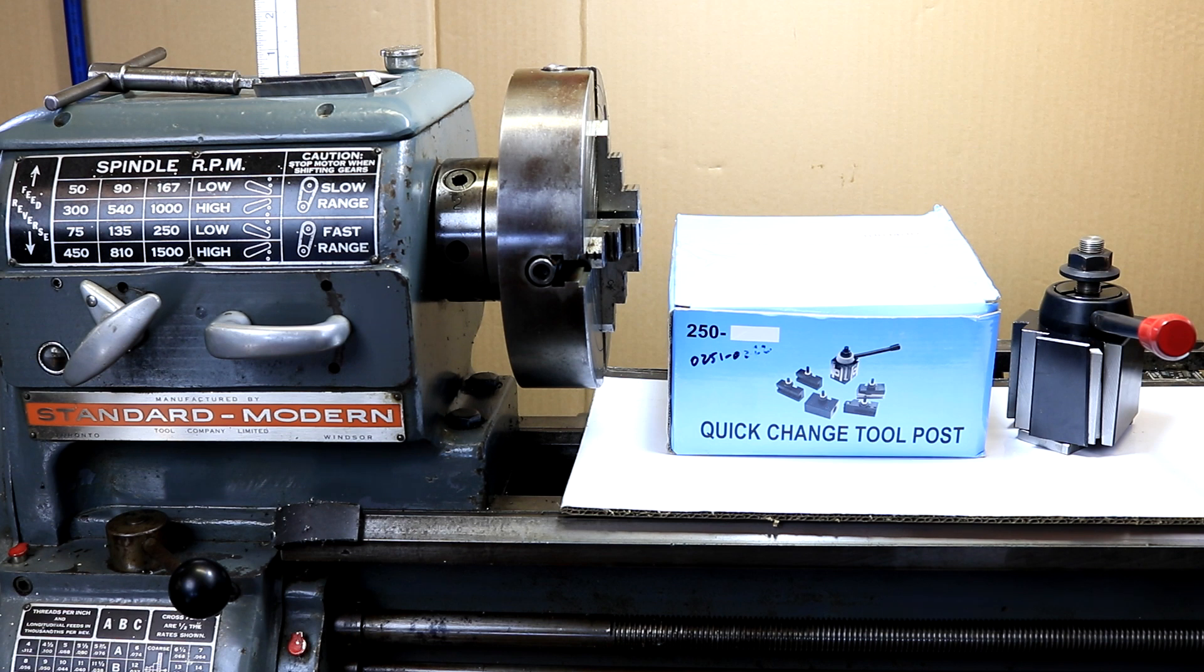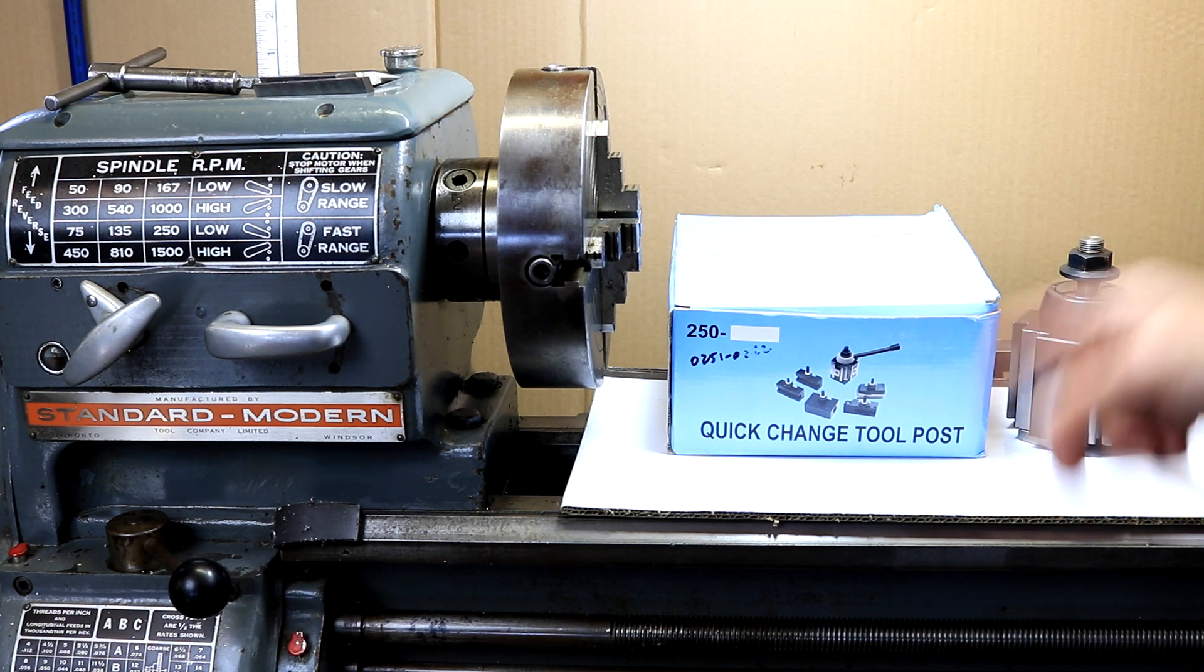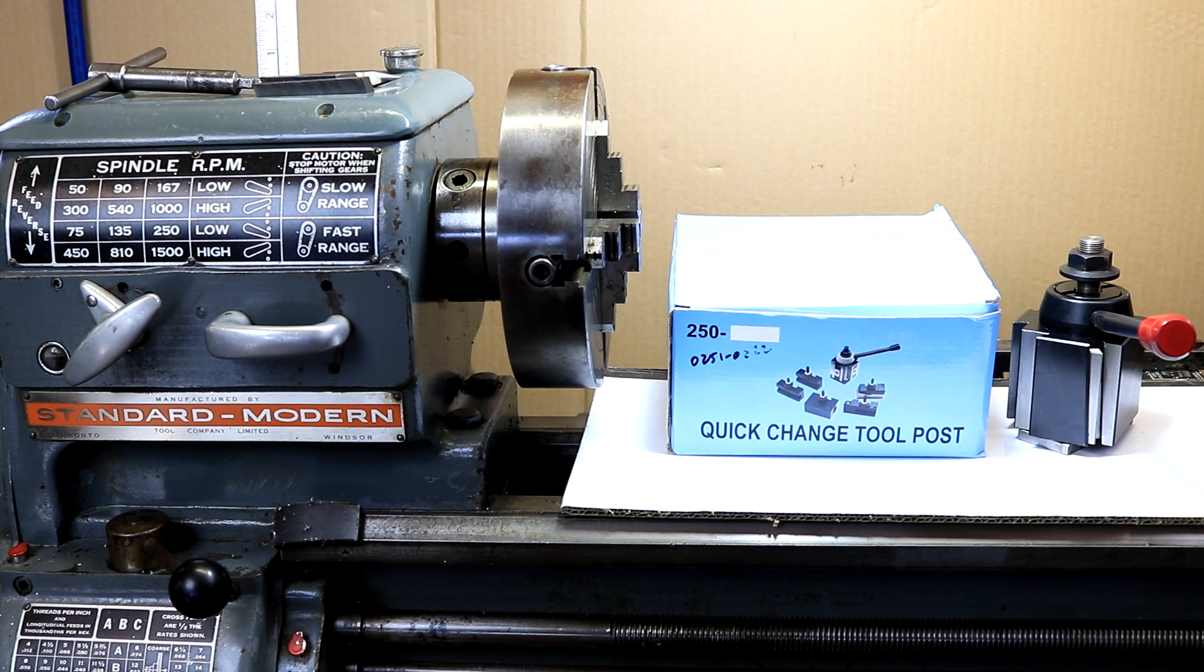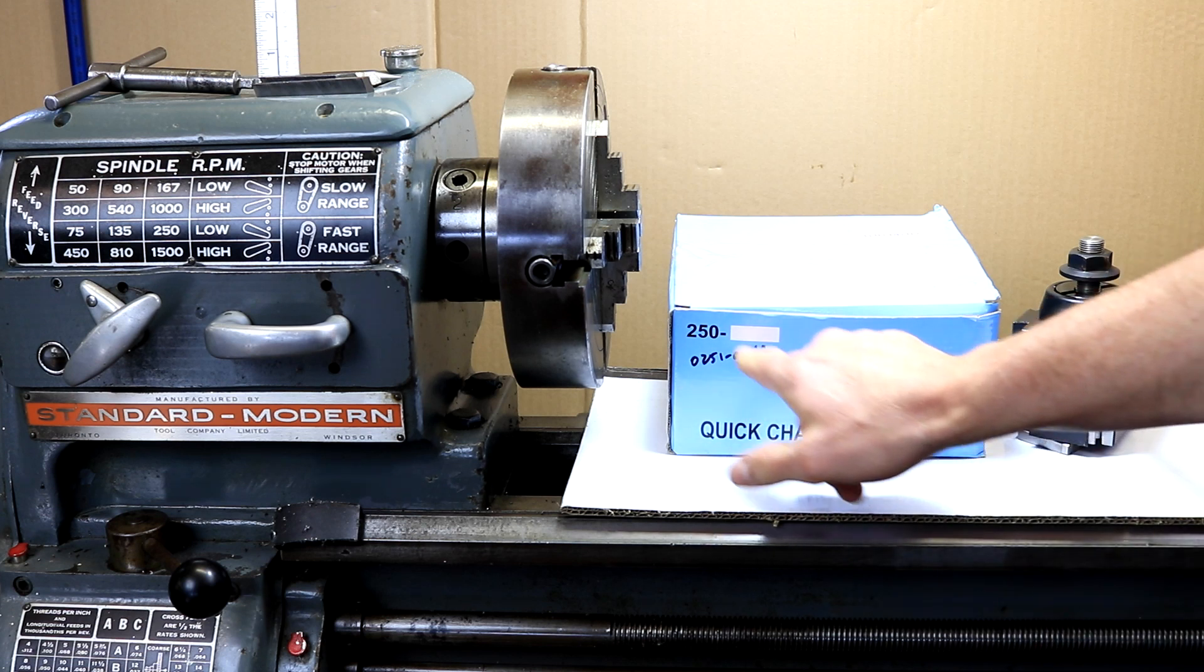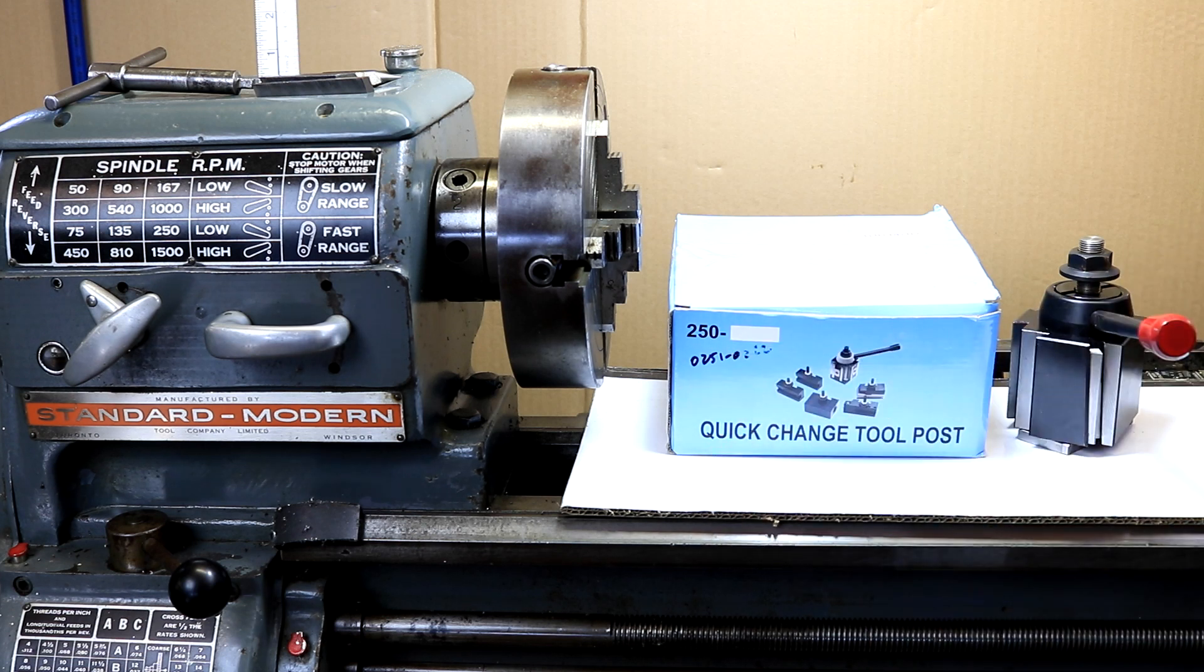The lathe that I'm fitting it to is a Standard Modern 1330 Utilathe. So you see many of these examples of this type of quick change tool post on Amazon, that's where I purchased mine, and they always seem to come in a blue box just like this with writing on it that you can sort of fill in the blanks.